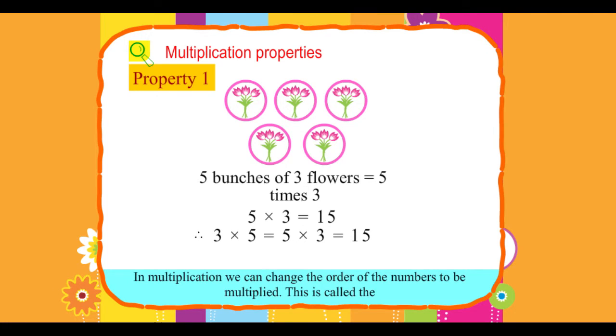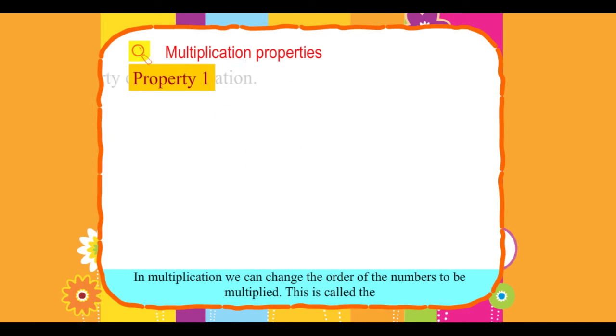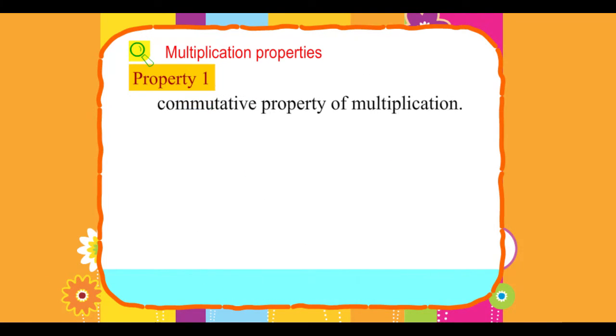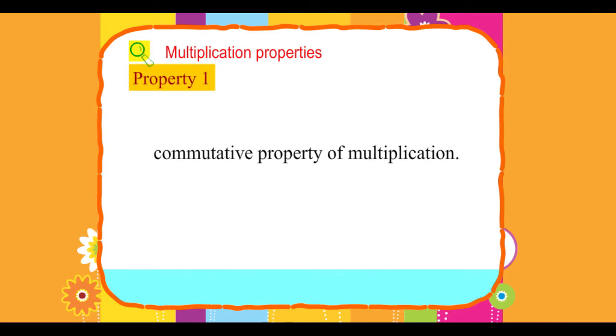In multiplication, we can change the order of the numbers to be multiplied. This is called the commutative property of multiplication.